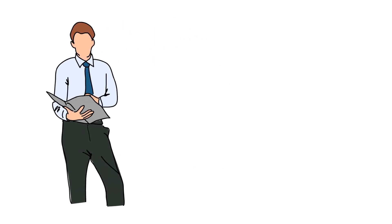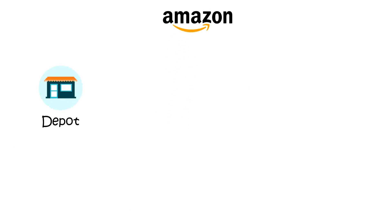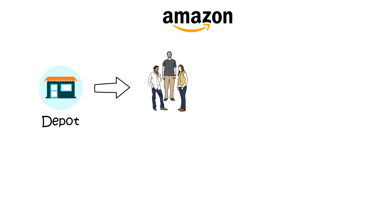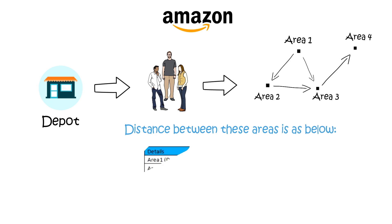Let's understand VRP with a simple example. Amazon has a shop in area 1 of the city — we will call it the Depot — and it has to deliver goods to three customers in the city. They reside in different locations: area 2, area 3, and area 4. The distance between these areas is shown below.